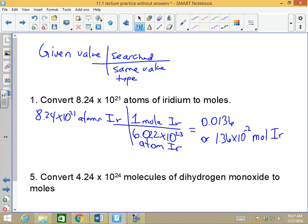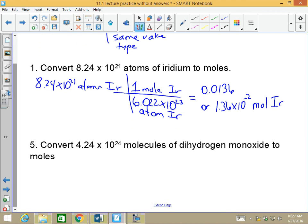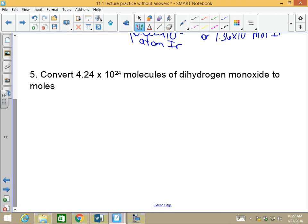That's the first sample. Let's work on the other one. The other one says the same type of question, but it's molecules. It makes no difference. I'm given 4.24 times 10 to the 24th molecules of dihydrogen monoxide, which is water.